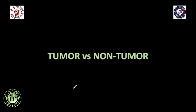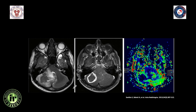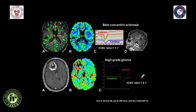Moving on to diagnosing tumor versus non-tumor pathologies: this example shows a lesion with central T2 hypointensity, peripheral rim enhancement on post-contrast T1, and hypoperfusion on perfusion imaging — implying a non-tumor pathology. This was a tuberculoma.